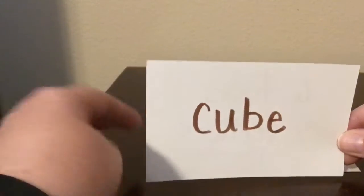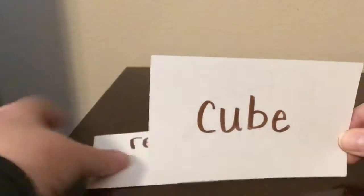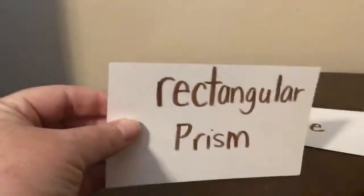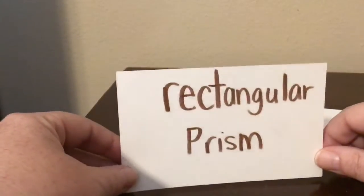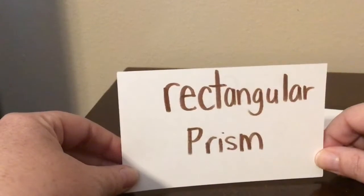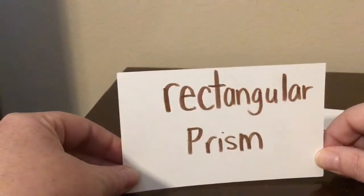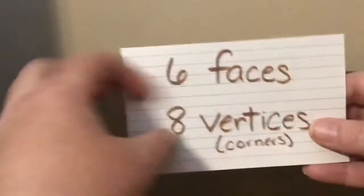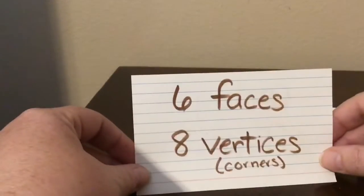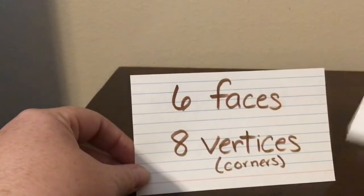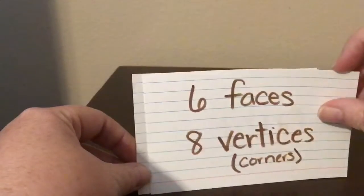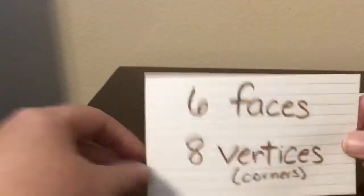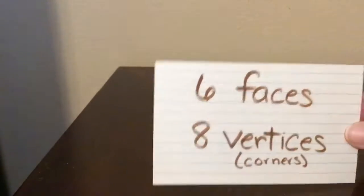While you're going around, you can involve your siblings in this too. You're going to find a rectangular prism. A rectangular prism is kind of like a rectangle, except it has six faces and eight vertices, just like a cube.